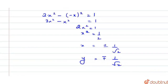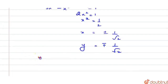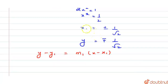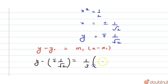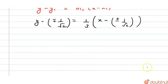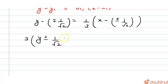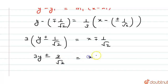Now we have the coordinates and the slope M1 = 1/3. The equation of the normal is y - y1 = M1·(x - x1), where x1 and y1 are the coordinates (±1/√2, ∓1/√2). Substituting: y minus (∓1/√2) = (1/3)·(x minus (±1/√2)). Multiplying through by 3: 3y ± 3/√2 = x ∓ 1/√2.